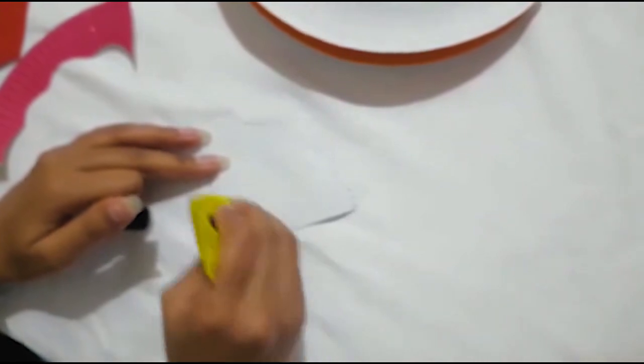Now apply some glue on the pointing edge of the tail and paste it at the back of the hen's body.